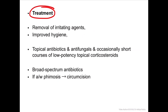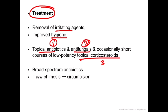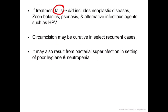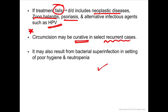Overall treatment: removal of the irritating agent and maintenance of hygiene, topical antibiotic or antifungal along with low-potency topical corticosteroid. If oral or injectable antibiotics are needed, broad spectrum antibiotics should be preferred. If phimosis is present, circumcision should be advised. If treatment fails, rule out neoplastic causes, Zoon's balanitis, psoriasis, or alternative infectious agents like HPV. Circumcision may be curative in select recurrent cases.